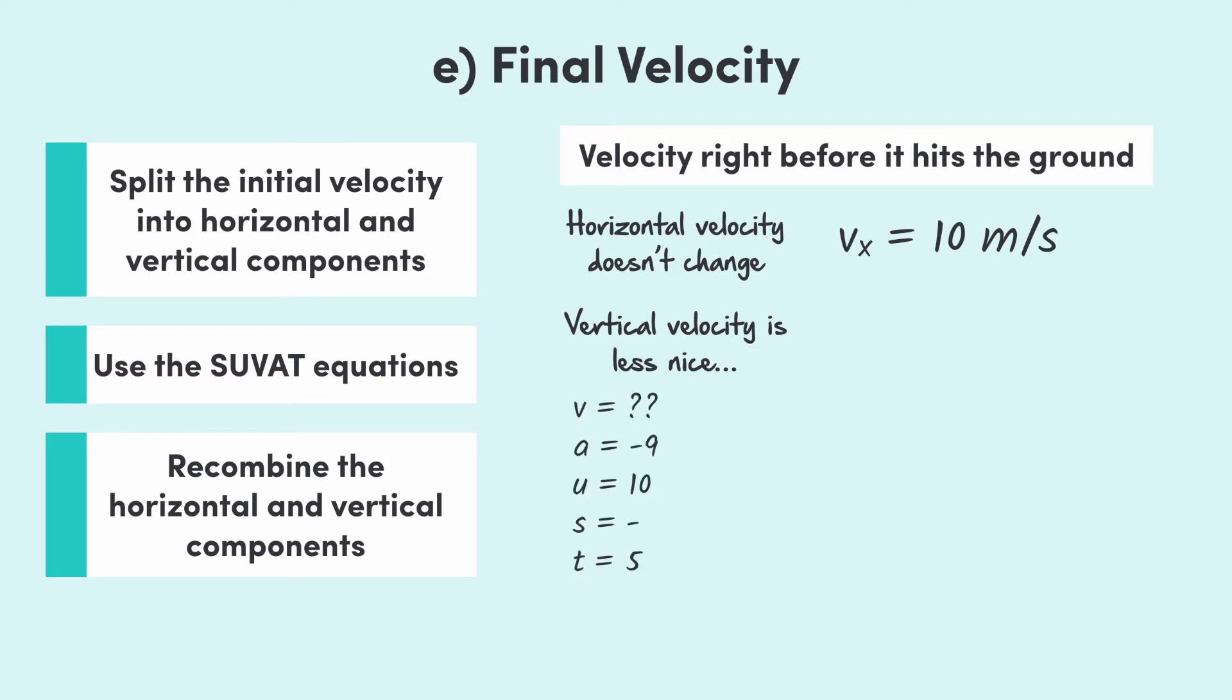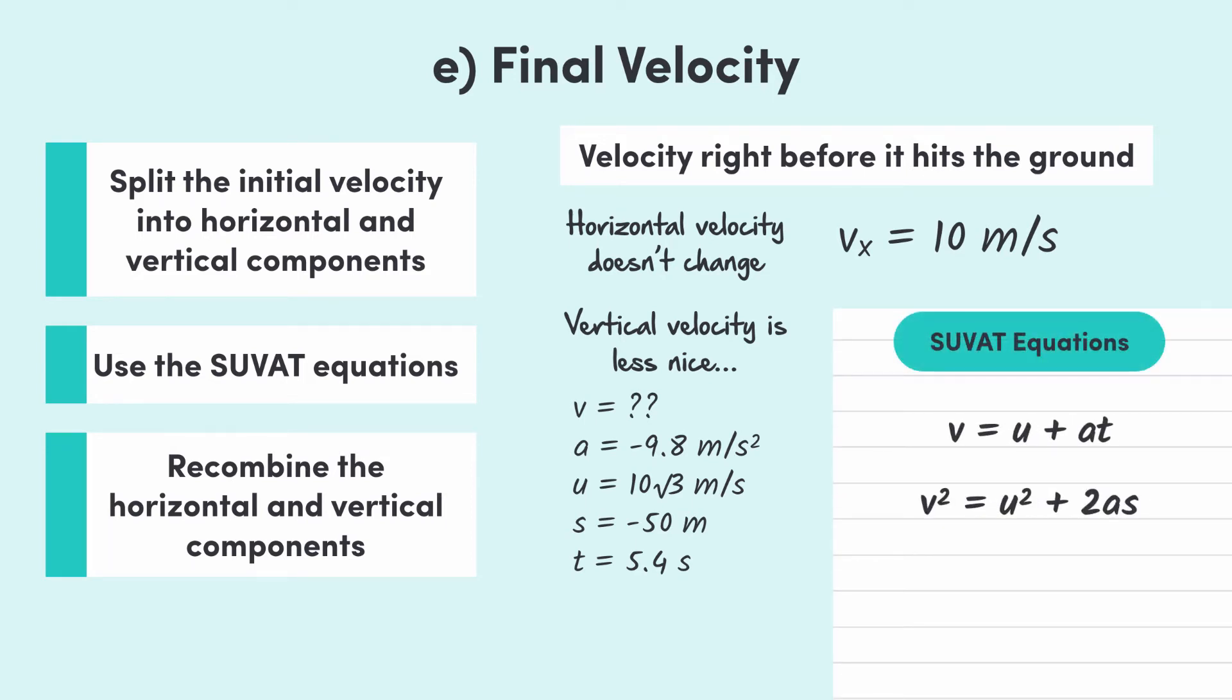Here, we're looking for v, and we have all of the other variables from the previous parts. So, we can use either of the two equations that have v in them. I'll choose v equals u plus at since it's the simplest. So, subbing the values we already have, v equals 10 root 3 minus 9.8 times 5.4, which gives us negative 35.8. Again, negative because it's downwards.